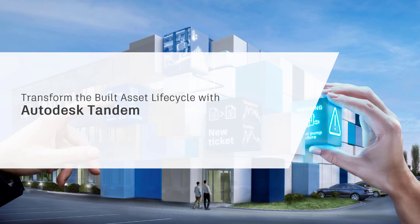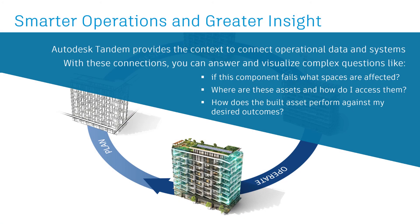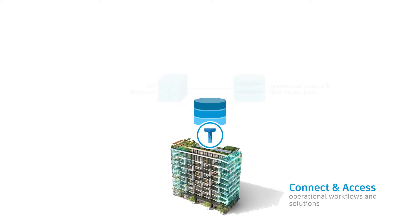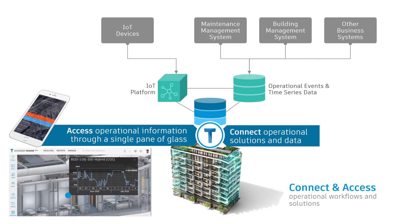Now let's take a quick look into the future at how Autodesk Tandem will transform the built asset lifecycle. Autodesk Tandem provides the context to connect operational data and systems. With these connections, you can answer and visualize complex questions like: If this component fails, what spaces are affected? Where are these assets and how do I access them? And how does the built asset perform against my desired outcomes? We'll create those connections by linking the assets, spaces, and systems in Tandem to operational systems and data. Autodesk Tandem can help accelerate operational readiness by using the asset and space data to initialize maintenance management, building management, and IoT systems.